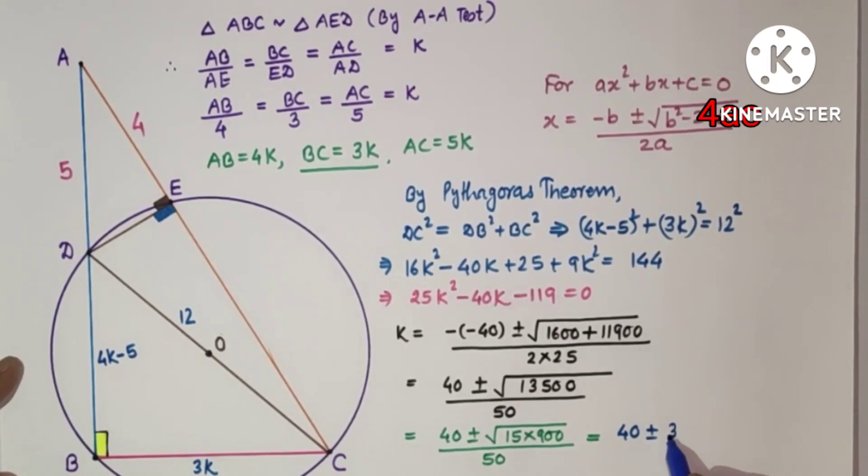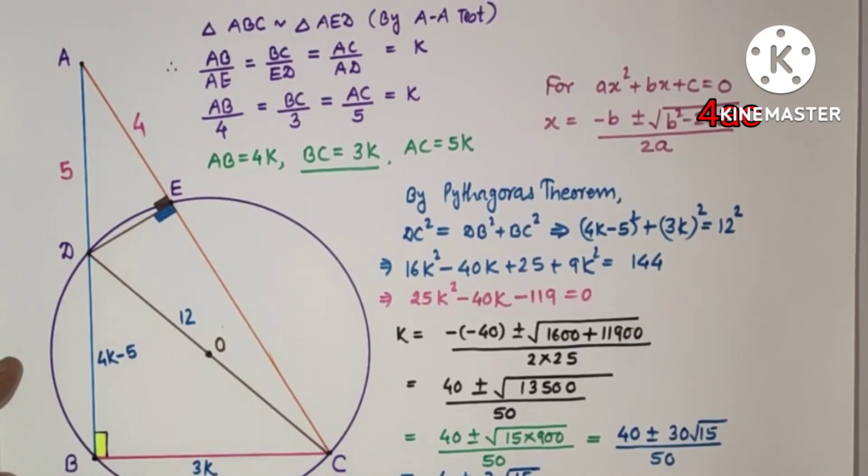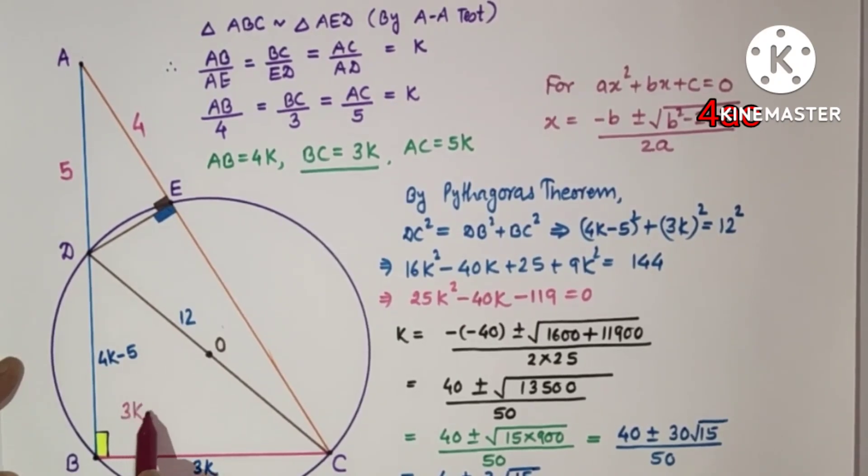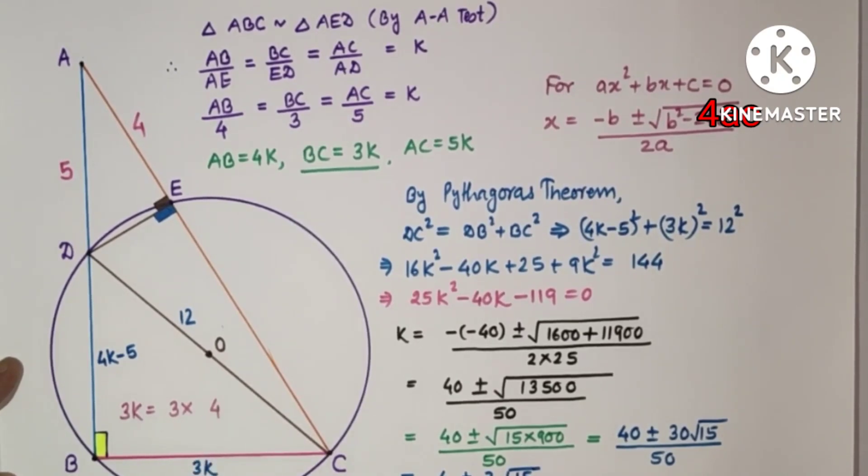But BC is 3K, therefore 3K equals 3 into 4 plus or minus 3 root 15 by 5.